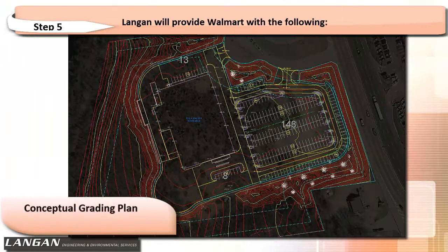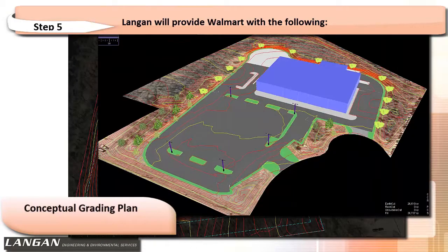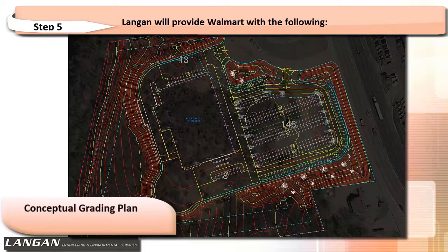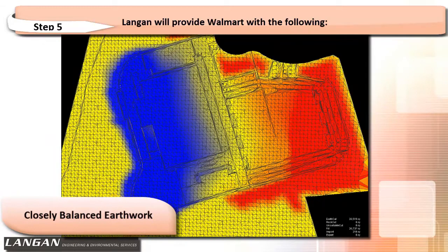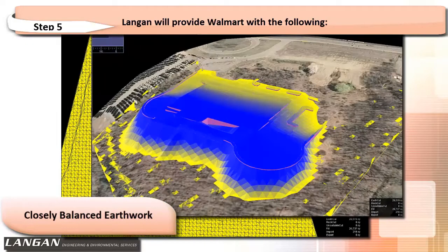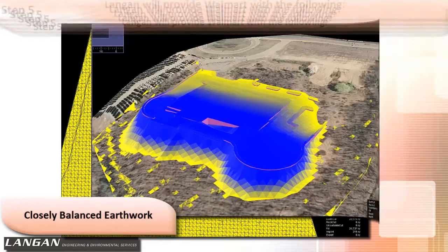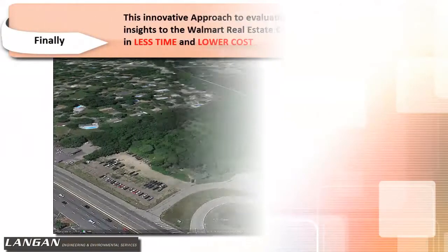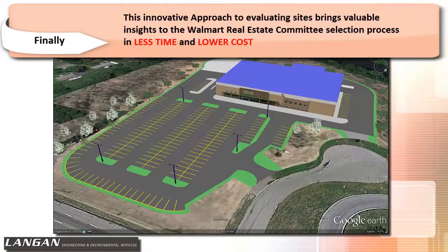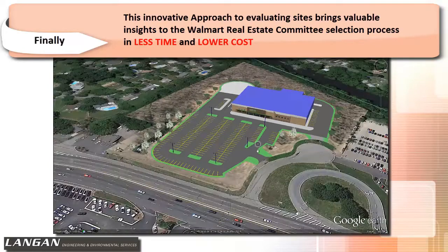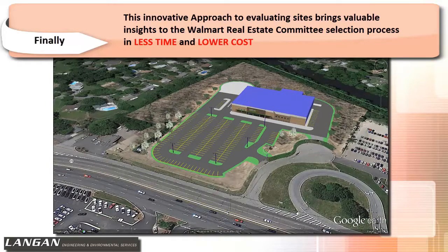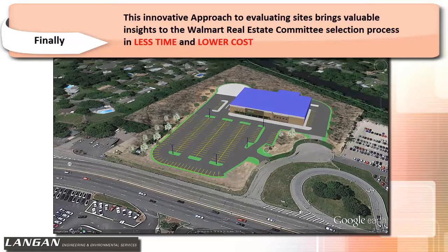An optimized conceptual grading is produced by utilizing artificial intelligence software that minimizes earthwork and saves money. Earthwork and fill quantities showing a closely balanced site, as well as retaining wall quantities if required. Finally, this innovative approach to evaluating sites brings valuable insights to Walmart's Real Estate Committee's selection process in less time and lower cost. Thank you for watching.